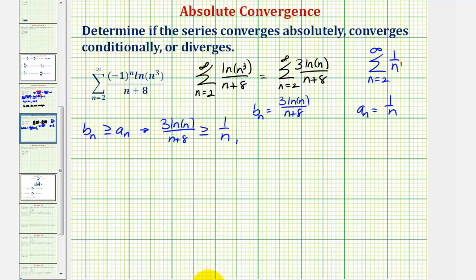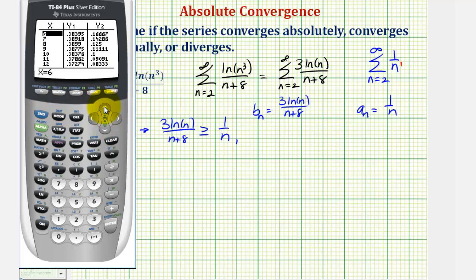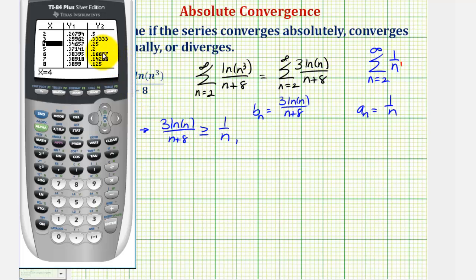Let's make this comparison on the calculator. Press y equals and for y two enter one over x, representing one over n, then press second graph to go back to the table and scroll to n equals two. We're trying to show that y one, b sub n, is greater than or equal to y two, a sub n. At first y one is less than y two, but starting at n equals four, b sub n is greater than a sub n. So this holds true for n greater than or equal to four.